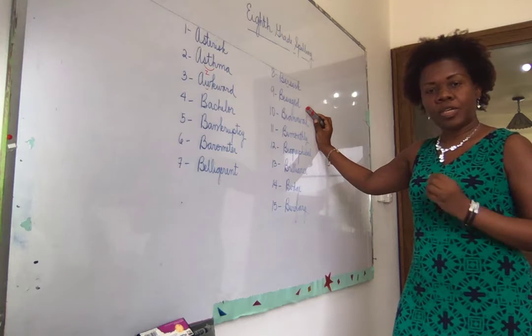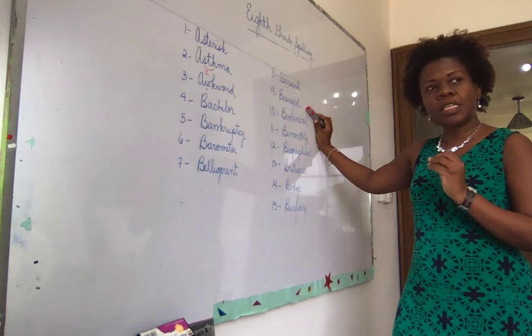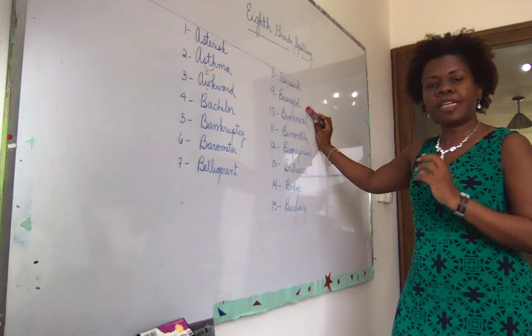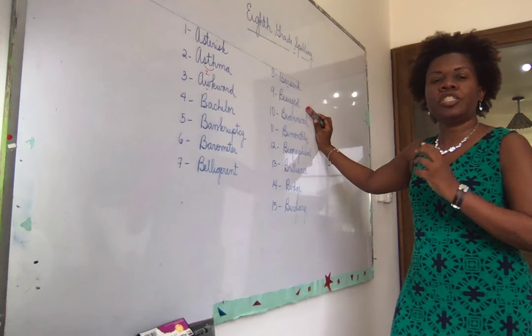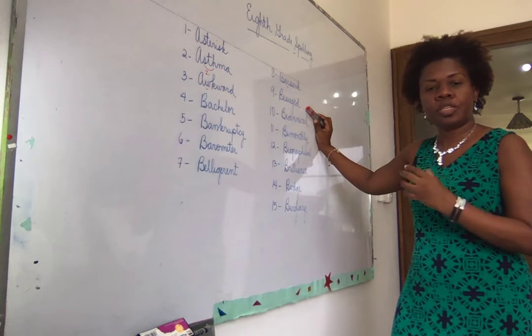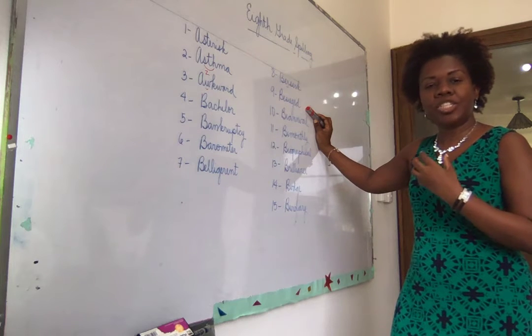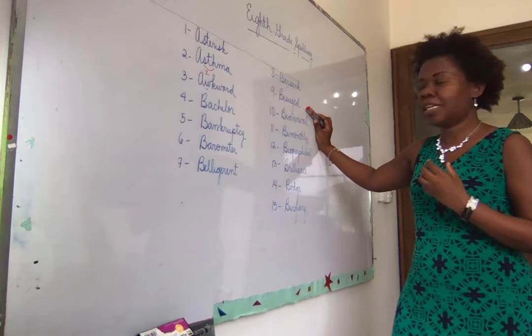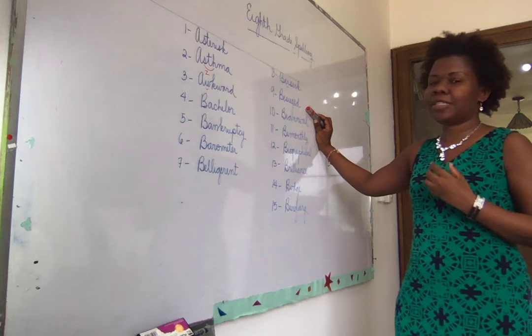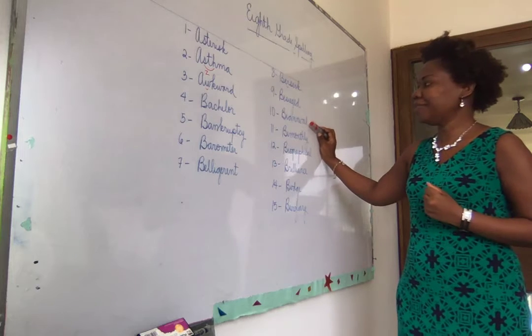Then we have besieged. Notice there's a little combination of letters at the end: -ged. Besieged. You need to practice that to get it correctly.